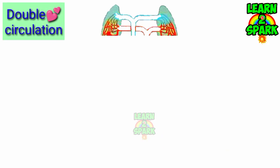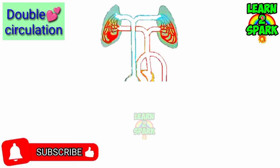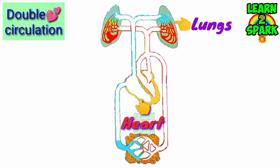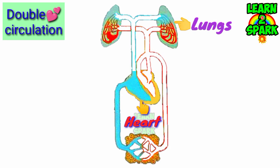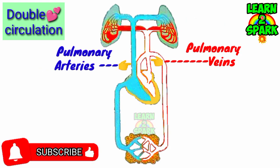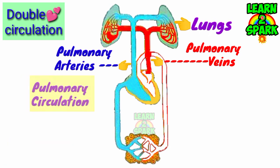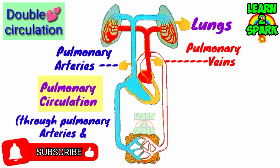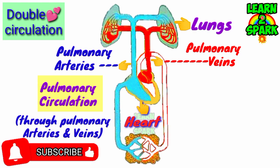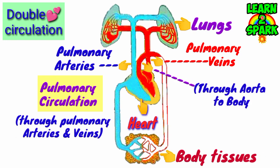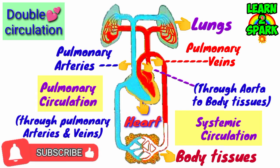Let's discuss double circulation in detail. The circulation of blood between the heart and lungs through pulmonary arteries arising from the right ventricle and pulmonary veins arising from the lungs is called pulmonary circulation. Whereas the circulation of blood between the heart and other body organs through the aorta is called systemic circulation.